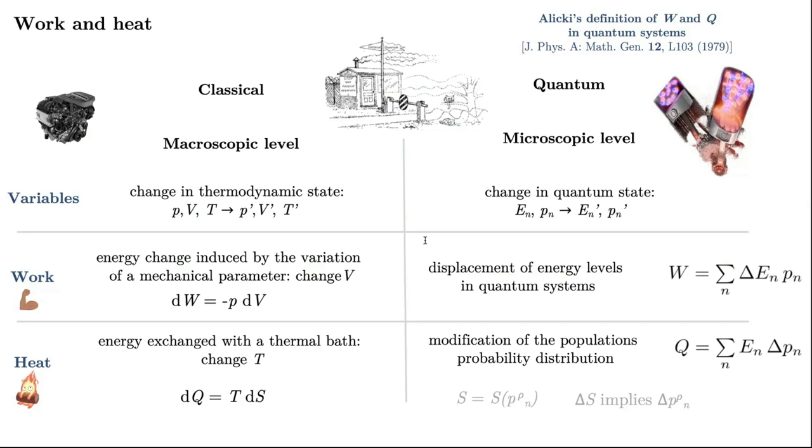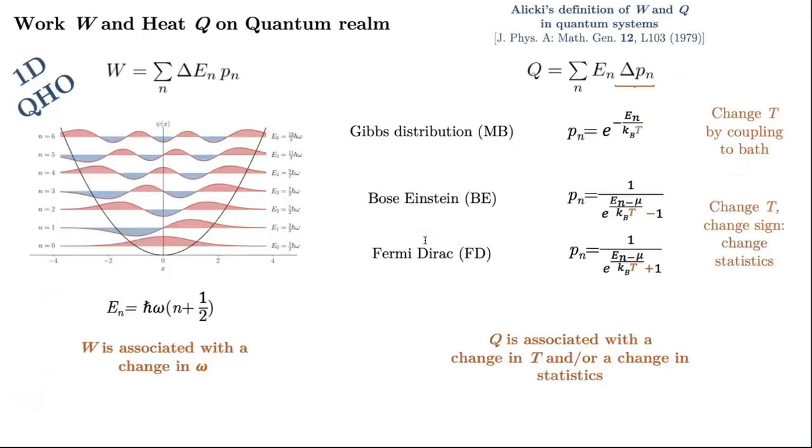In the quantum case, and at the microscopic level, a change in the quantum states can be achieved by changing the energy levels or the occupations or populations of those energy levels. Then, following a liquid definition of work and heat in the quantum realm, the useful energy of work or work is related to a change in the energy levels by keeping the occupations fixed, and heat is related to a change in the occupations by keeping the energy levels fixed. We can think in an example, the one-dimensional quantum harmonic oscillator. In that case, the energies of the system depend linearly on the frequency. So, if we want to change these levels, we need to compress or expand the trap. So, if this is quite intuitive, work is related to expansion and compression of the trap.